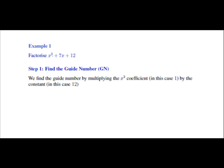So here we are asked to factor x squared plus 7x plus 12. The first step is to find the guide number. We find the guide number by multiplying the x squared coefficient, that's the number beside the x squared, by the constant.